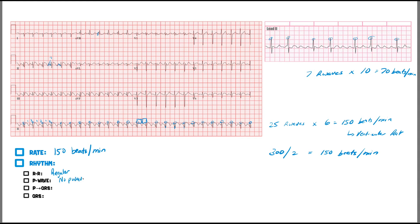No P wave — go to V1. In lead 2 we have these spiky sawtooth-looking parts. In V1, I see a sawtooth structure followed by a QRS complex, then another sawtooth, then a QRS. In lead 2, same thing — sawtooth then QRS. Checking leads 3 and AVF as well — same sawtooth pattern. Anytime you see a P wave that looks like a sawtooth, that should clue you in that this might be atrial flutter.